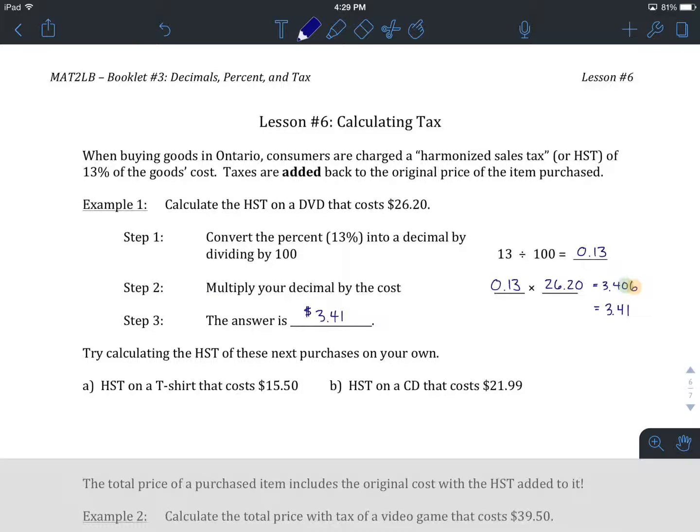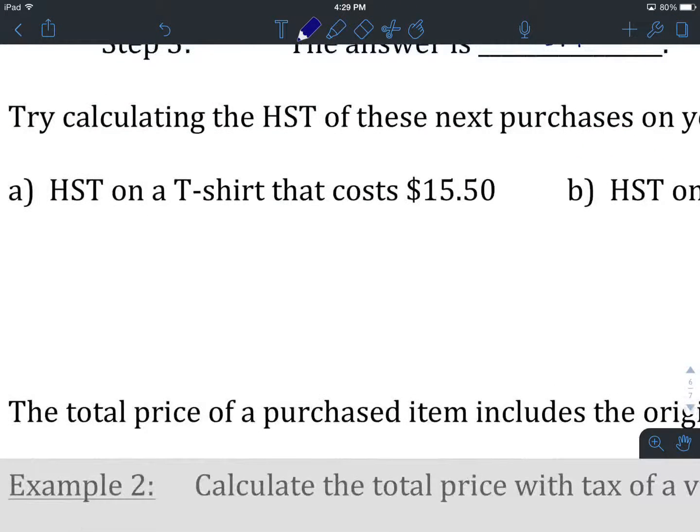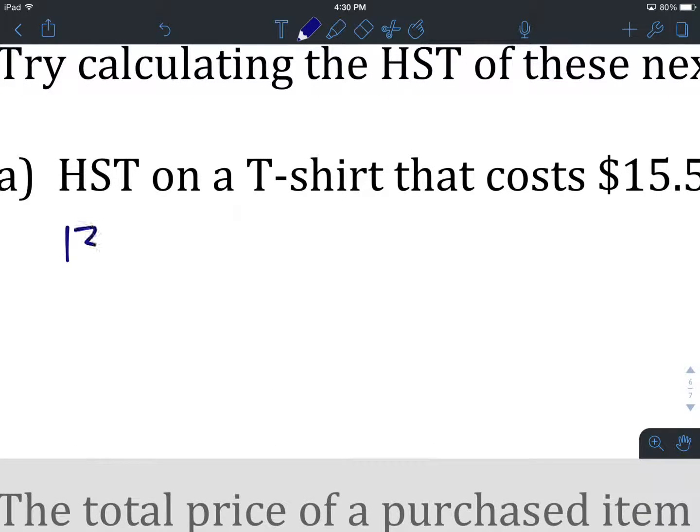Let's try calculating some HST on a couple other items. We'll try one more together, and then you can try one too. Let's find the HST on a t-shirt that costs $15.50. Our first step is to convert our HST percentage, which is 13, into a decimal by dividing by 100, and that's going to give us 0.13.